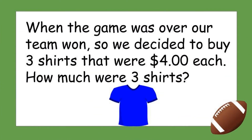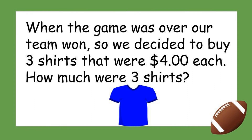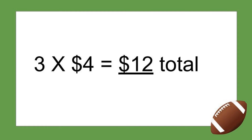When the game was over, our team won! We decided to buy three shirts that were $4 each. How much were three shirts? Pause the video and solve our last problem. Our factors are three and four because we bought three shirts and each one was $4. If you said the total was $12, you are correct! To solve it, I would lay out three shirts, put a four inside each one, and count by fours: 4, 8, 12. Which multiplication strategy did you use?